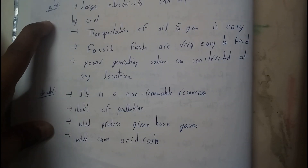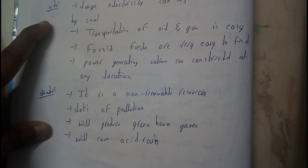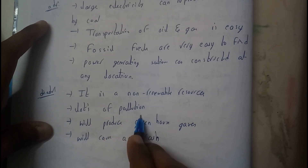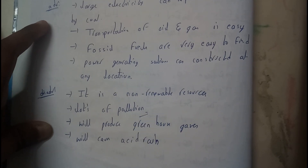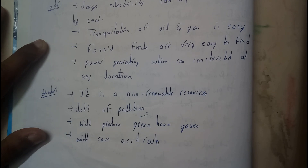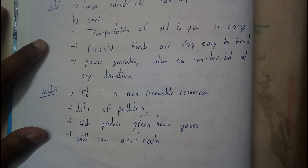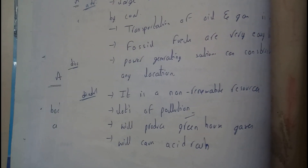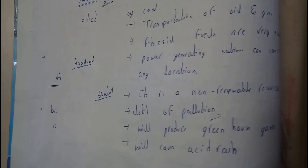Disadvantages of fossil fuels: they are non-renewable; they produce lots of pollution and greenhouse gases; and they are the main cause of acid rain.